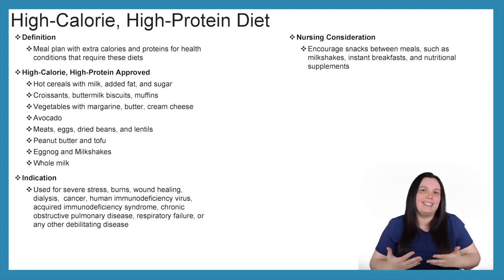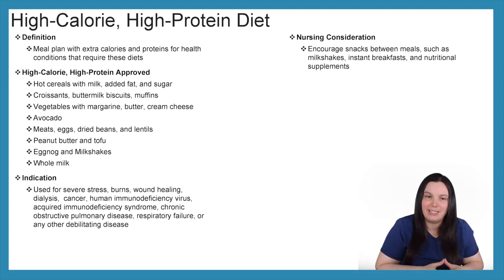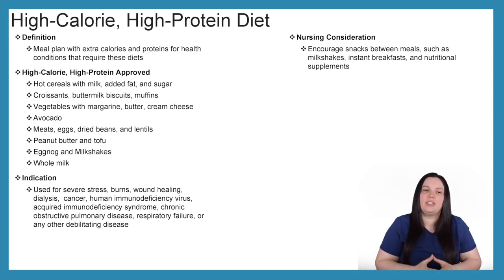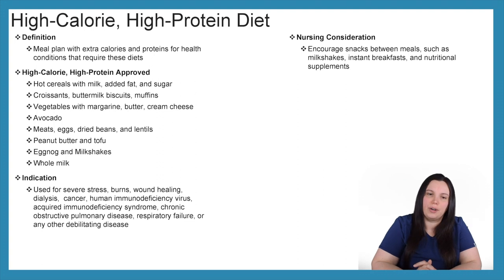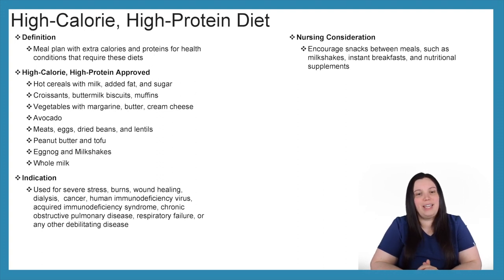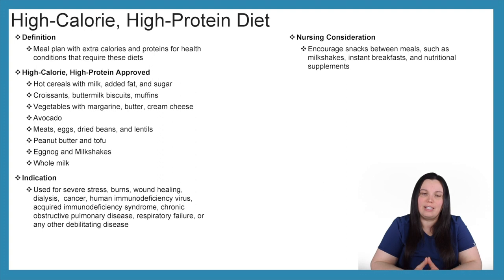Another diet you're going to see a lot is the high calorie, high protein diet — a meal plan with extra calories and proteins for health conditions requiring these dietary foods. Approved items include hot cereals with milk, added fat and sugar, croissants, buttermilk biscuits, muffins, vegetables with margarine, butter or cream cheese, avocado, meats, eggs, dried fruit, lentils, peanut butter, tofu, eggnog, milkshakes, and whole milk.